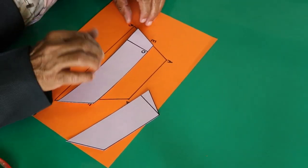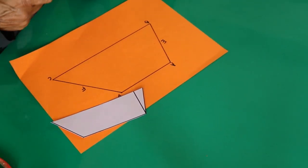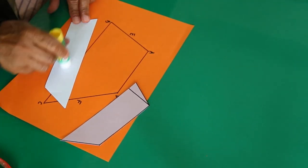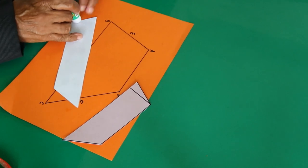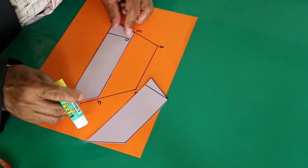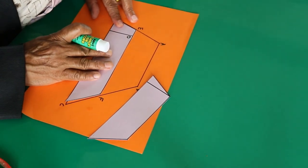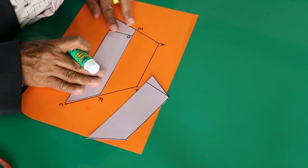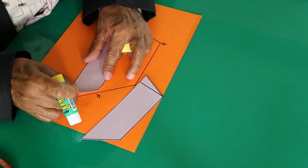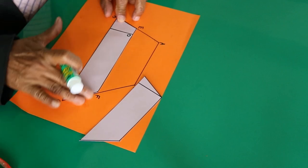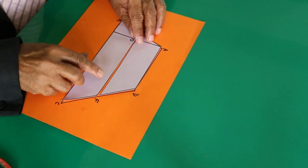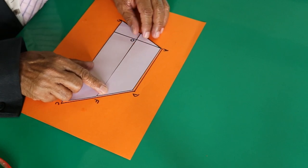Now you have two trapeziums. Glue one with a glue stick and paste it over there. Paste it over there. You have the previous trapezium here exactly this way.